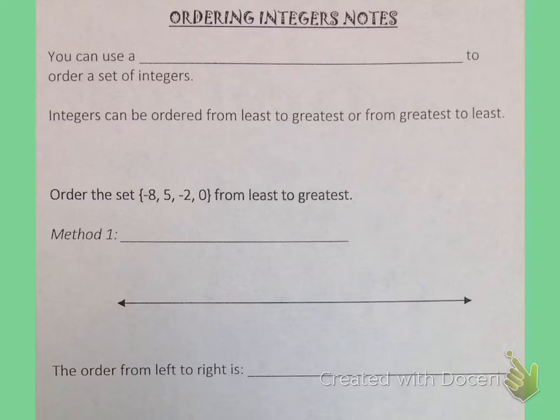Now let's talk about ordering integers. You can use a number line to order a set of integers. Integers can be ordered from least to greatest or from greatest to least. So you need to read the questions very carefully when you are ordering integers. This one says order the set negative 8, positive 5, negative 2, and 0 from least to greatest. The first method we're going to use is the number line.